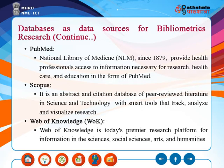Web of Knowledge is today's premier research platform for information in the sciences, social sciences, arts, and humanities. It is a suite of databases containing about 25 different databases including Science Citation Index, Social Sciences Citation Index, and Arts and Humanities Citation Index. It covers 23,000 academic and scientific journals, 23 million patents, 110,000 conference proceedings, and 9,000 websites. Coverage spans from 1900 to the present day.